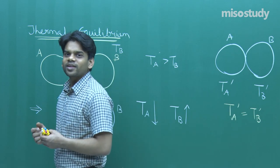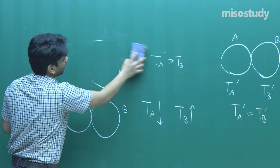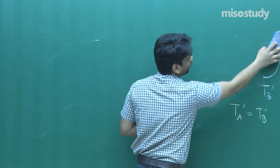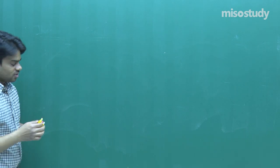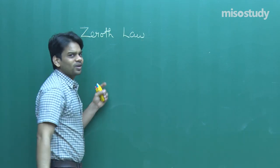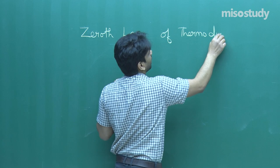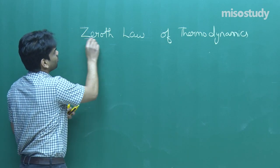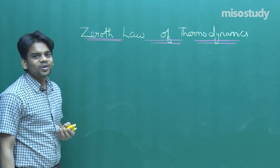Now, how do we use this concept to understand the zeroth law of thermodynamics? Let's go ahead and understand the zeroth law. I believe thermal equilibrium is not too tough to understand — it's an easy concept, and the zeroth law is also easy. Don't worry about why it is called the zeroth law; it is a very basic law and not too tough to understand.